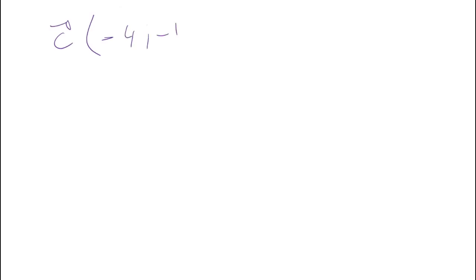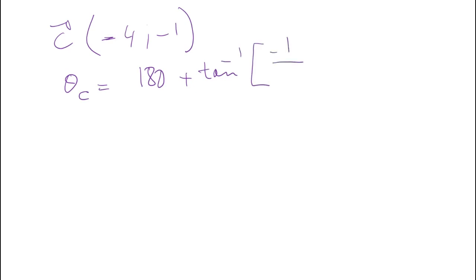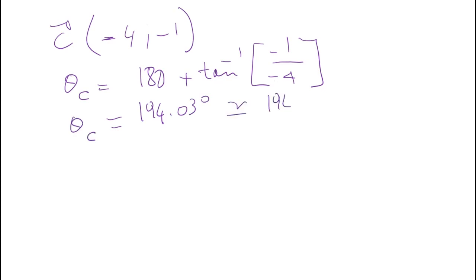Let's do one more example. Let's say I have a vector C that has the Cartesian coordinate negative four, negative one. This will be located in the third quadrant. If I am in the third quadrant, the direction of this vector C is automatically 180 degrees plus arc tangent of y over x. So negative over negative is positive, giving us 194.03 degrees.